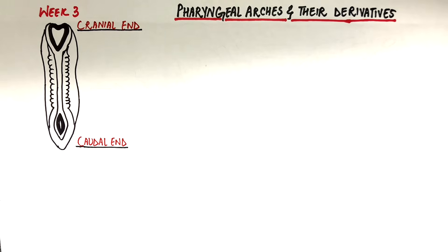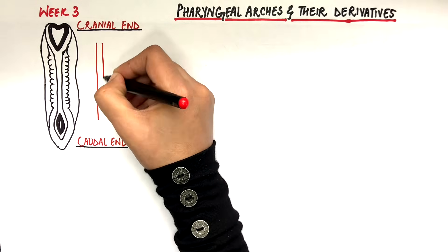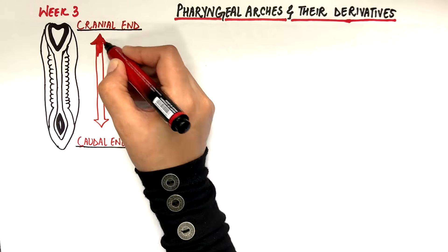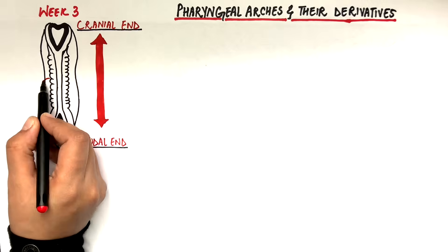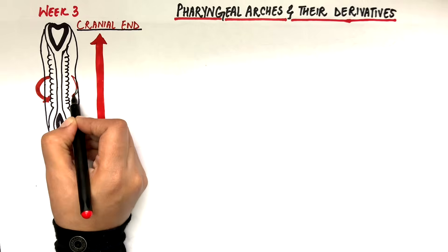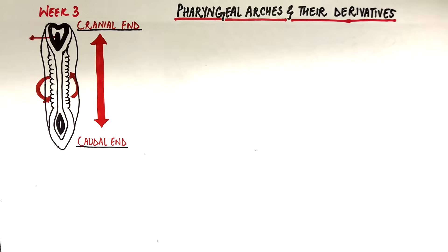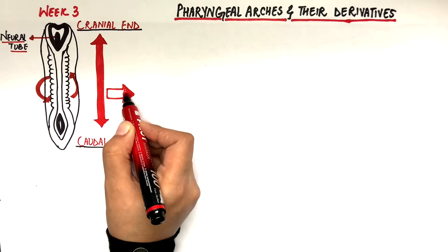The embryo will start folding at two planes or axes: the craniocaudal axis and the lateral axis. And just to mention here that this will be the neural tube lying inside the embryo.